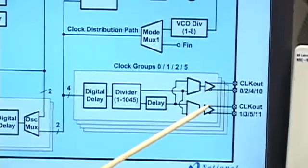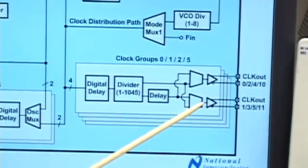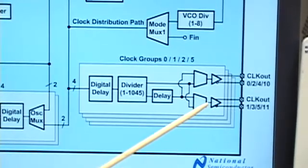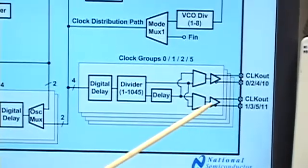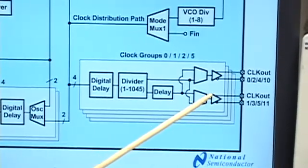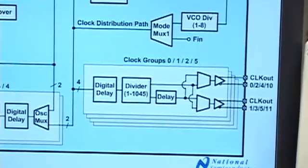There are two output buffers per block which can be configured to LVDS, LVCMOS, and LVPECL outputs. So the device is capable of up to 12 differential outputs or 24 single-ended outputs.